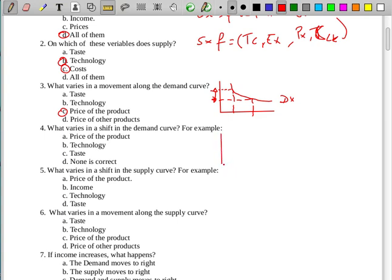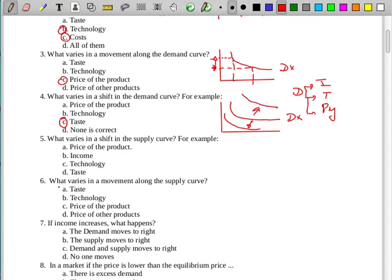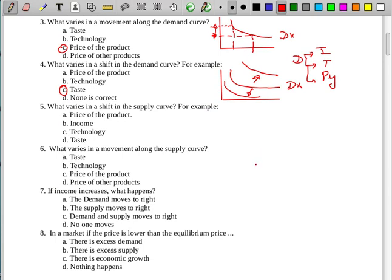The fourth: what varies in the demand curve? For example, price of the product. The technology test is not correct. This is the other case in demand equation or curve.